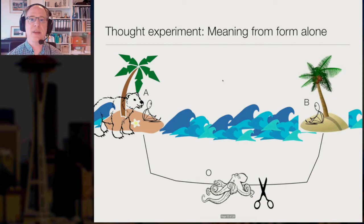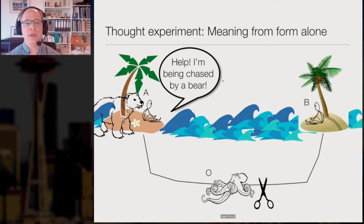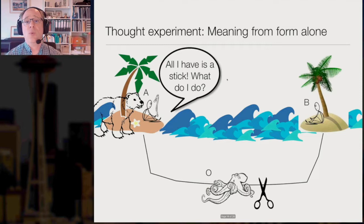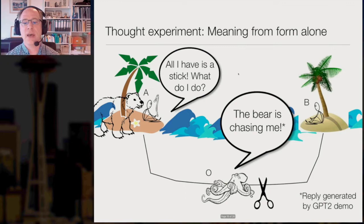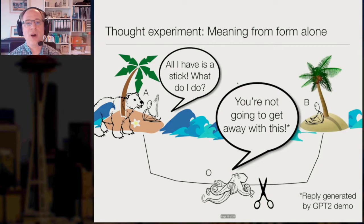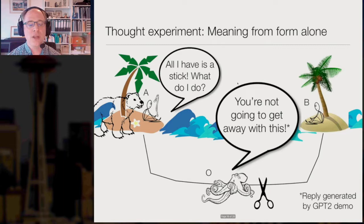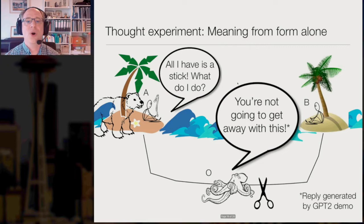Finally, let's raise the stakes: A is being pursued by an angry bear and calls for help — 'Help, I'm being chased by a bear. All I have is a stick. What do I do?' O doesn't know what to say. GPT-2 says things like 'the bear is chasing me' or 'you are not going to get away with this' — very entertaining but completely unhelpful responses. Check the appendix of our paper for more examples. At this point, there's no way A could perceive responses like this as meaningful. It's lucky for O that A got eaten by the bear before noticing the deception.